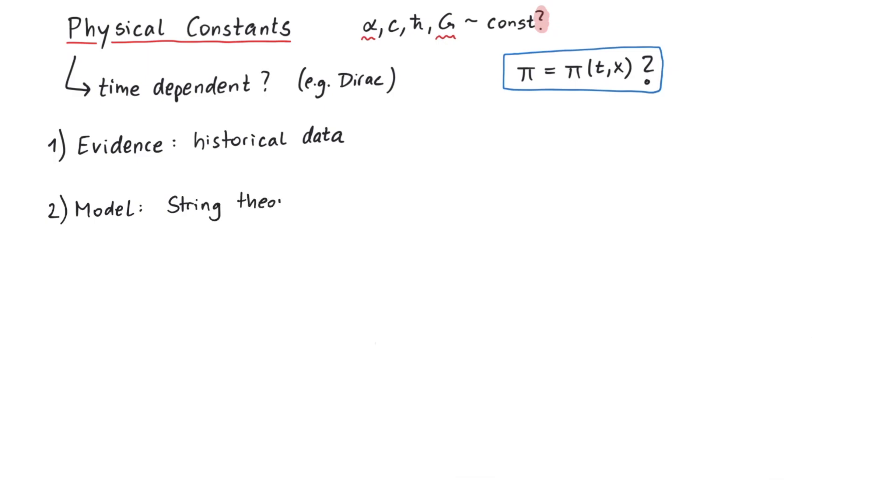He draws some inspiration from string theory and suggests that our four-dimensional Minkowski spacetime might actually be embedded within a five-dimensional manifold. If this were the case, some parts of pi could slip into this fifth dimension, thus decreasing the value of pi in our observable four-dimensional universe.